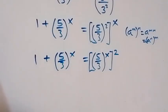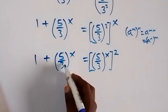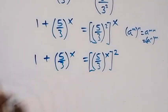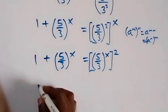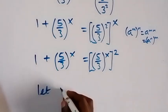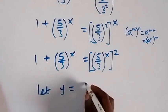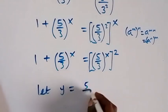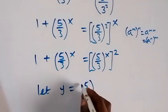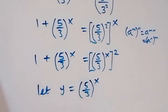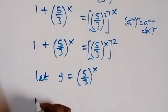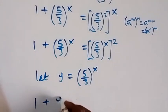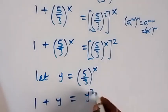We have (5 over 3) raised to power x common. So let's let a letter represent that. Let y equal (5 over 3) raised to power x. Then this equation becomes 1 plus y equals y squared.